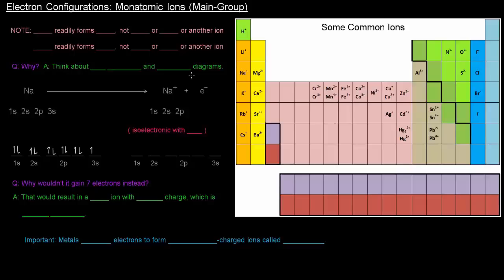Up until this video we've talked about the electron configuration specifically of atoms, and now we're going to talk about the electron configurations of ions, specifically monatomic ions, which is basically just when an atom becomes an ion by either gaining or losing electrons.